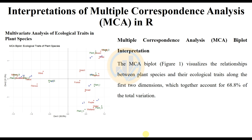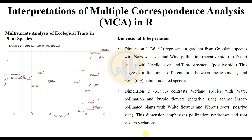Figure 1 presents the multivariate analysis of ecological traits in plant species. The MCA biplot visualizes the relationship between plant species and their ecological traits along the first two dimensions, which together account for 68.8% of total variation. Dimension 1 (36.9%) represents a gradient from grassland species with narrow leaves and wind pollination on the negative side to desert species with needle leaves and taproot systems on the positive side, suggesting functional differentiation between moist and dry habitat-adapted species.